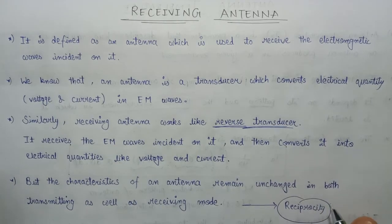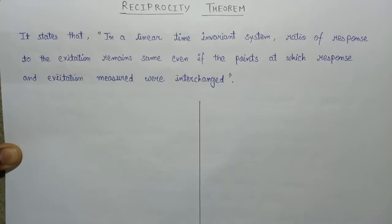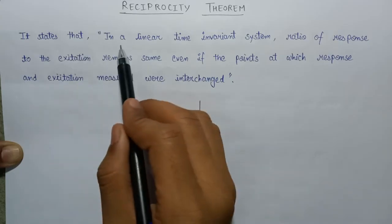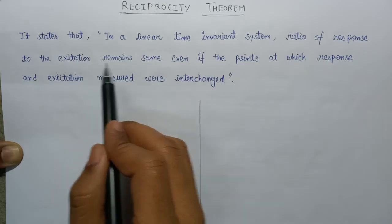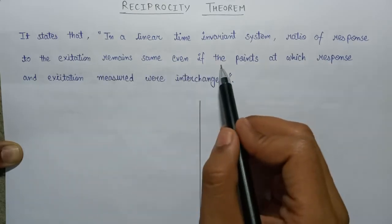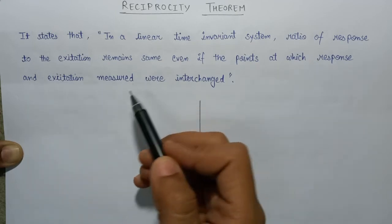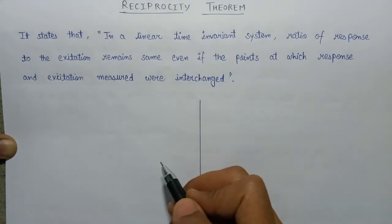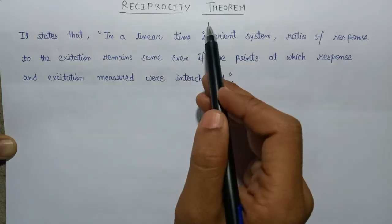This is a very important theorem from the examination point of view. The reciprocity theorem states that in a linear time-invariant system, the ratio of response to the excitation remains the same, even if the points at which the response and the excitation are measured were interchanged. Let's understand the reciprocity theorem with the help of figures — there are two cases associated with it.